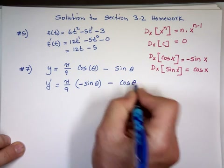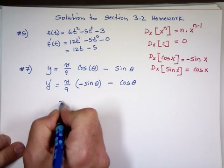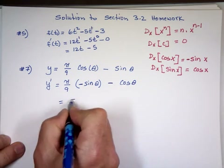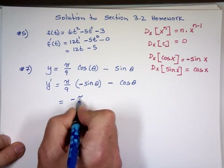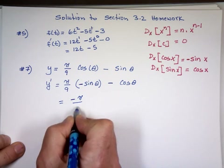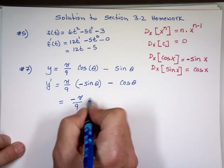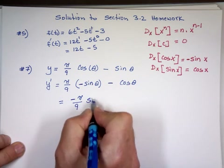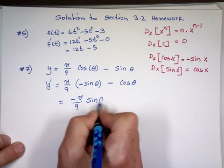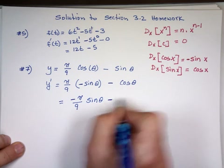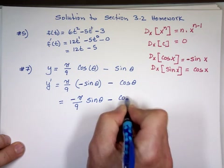So when you clean that, you get negative pi over 9 — positive times negative is negative — sine of theta minus cosine theta.